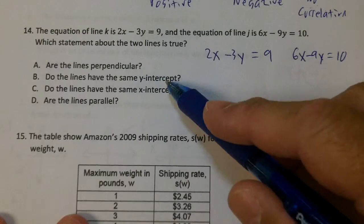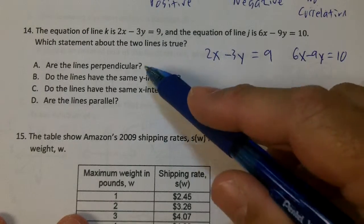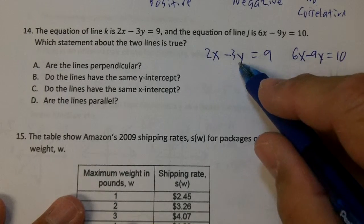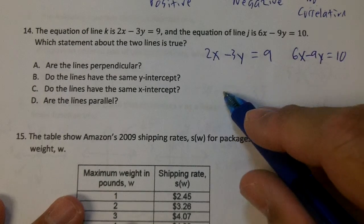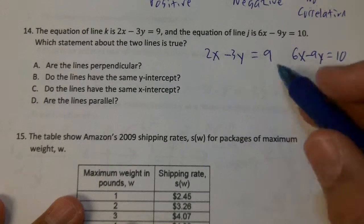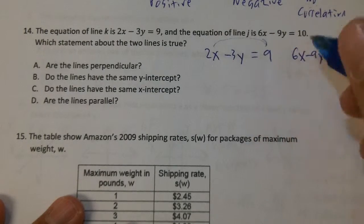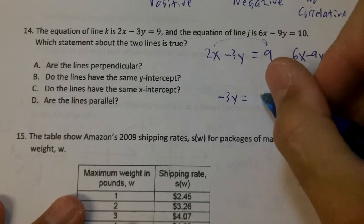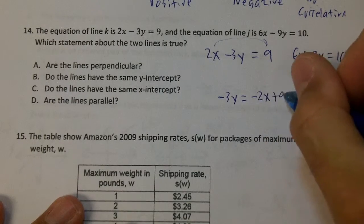We've got to know if the lines are perpendicular, if they have the same y-intercept, the same x-intercept, or if they're parallel. So what we're going to do is we're going to leave them standard but go down and make them mx plus b. I'm going to take this 2x over, leave some space here, and write down negative 3y equals negative 2x plus 9.